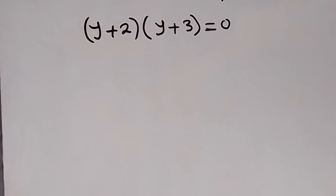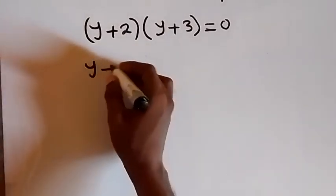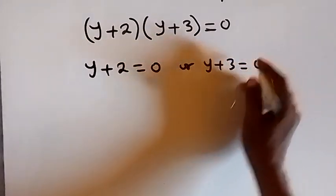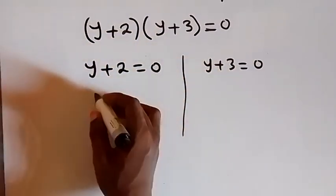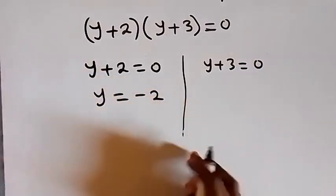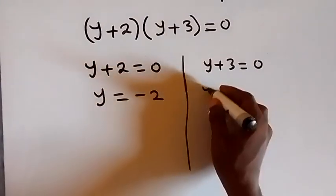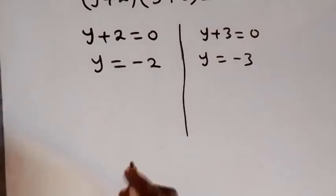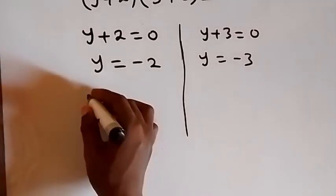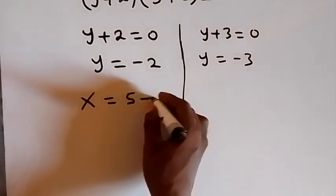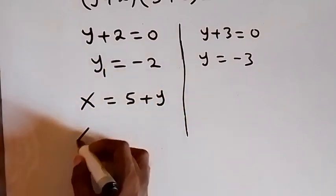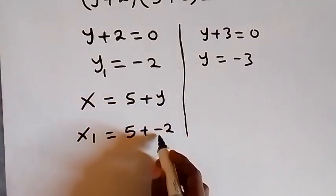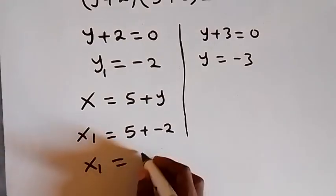So we have (y plus 2)(y plus 3) equals to 0. Then from here we have two possible cases: y plus 2 equals to 0, or y plus 3 equals to 0. From the first case we have y equals to minus 2, and from the second we have y equals to minus 3. We recall that x equals to 5 plus y, so for y₁ equals minus 2, x₁ equals 5 plus minus 2.